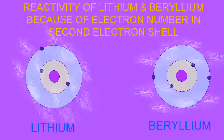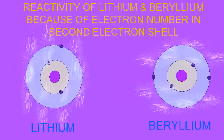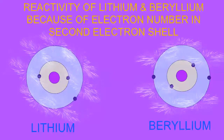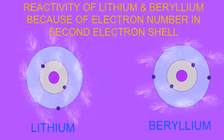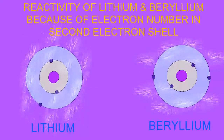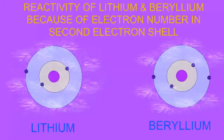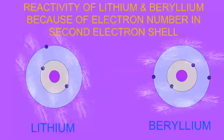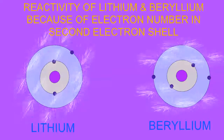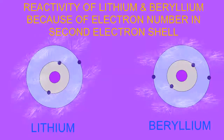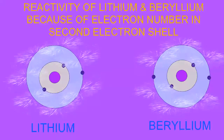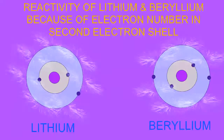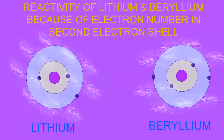Because lithium would have a full outermost shell if it could lose this one single electron in the 2s orbital, lithium is an electron donor that often becomes a positive ion as its electron leaves it to join another atom.